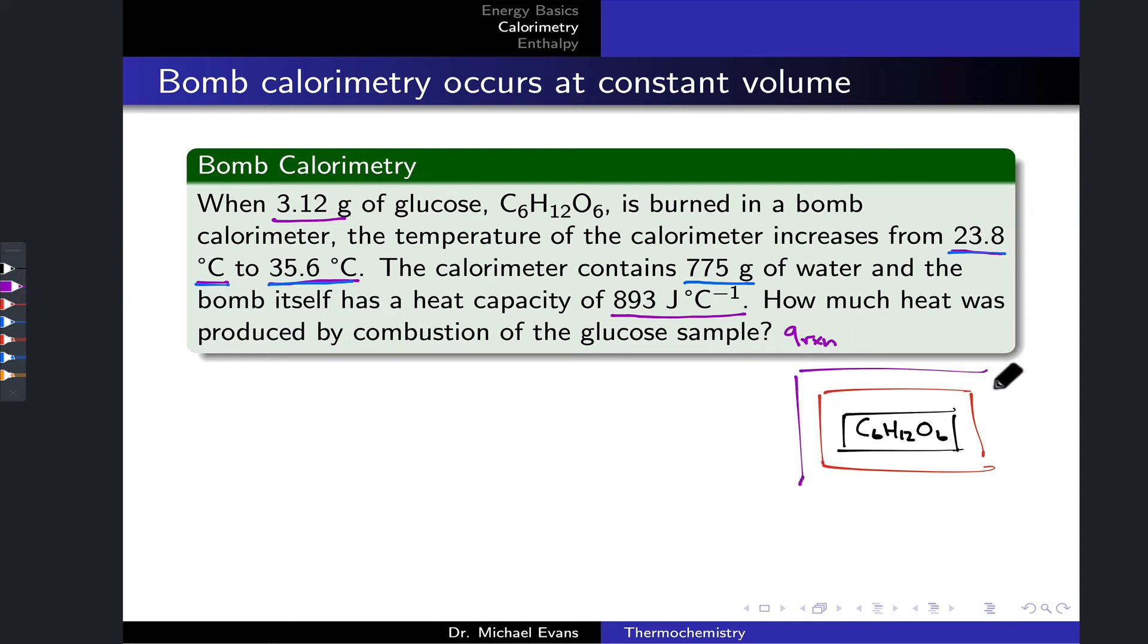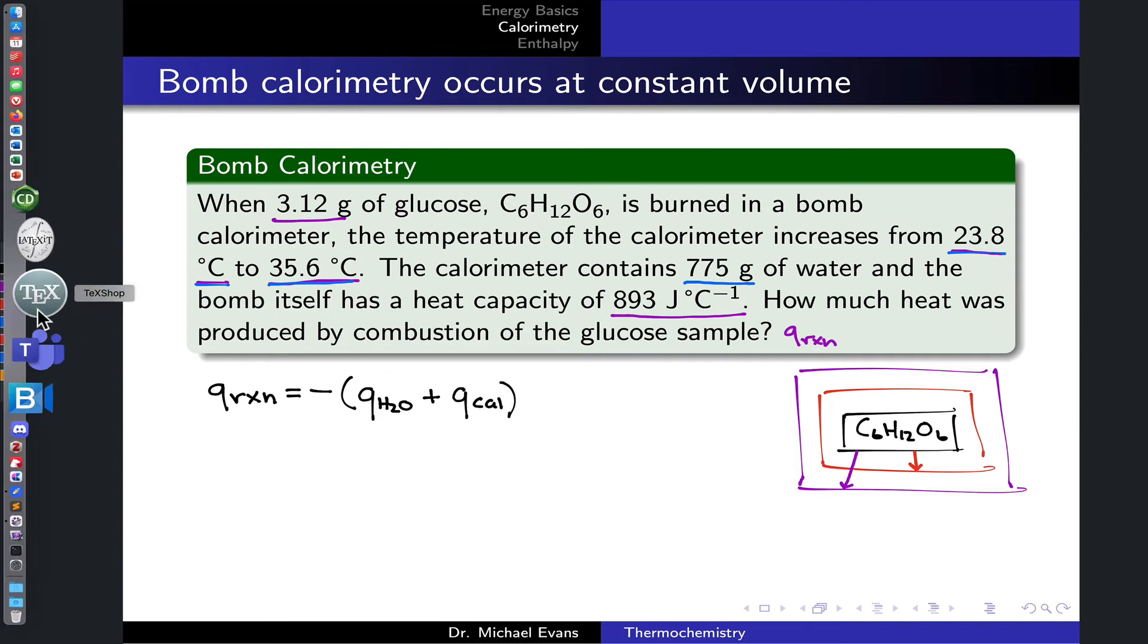We can have heat flow from the reacting glucose to the water, that's one of the components, and from the reacting glucose to the walls of the bomb, that's a second component to the heat balance. So the Q_reaction is going to be equal to the negative of two terms here. The purple term is Q_H2O, and the red term is what we might call Q_cal, the flow of heat to the walls of the bomb.